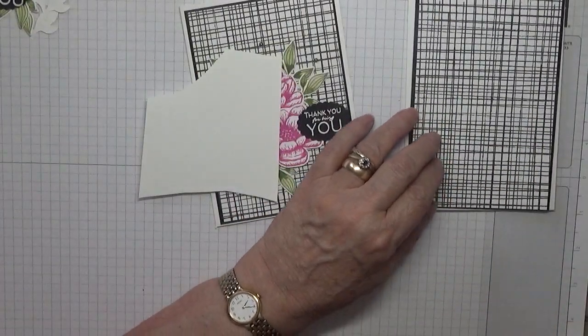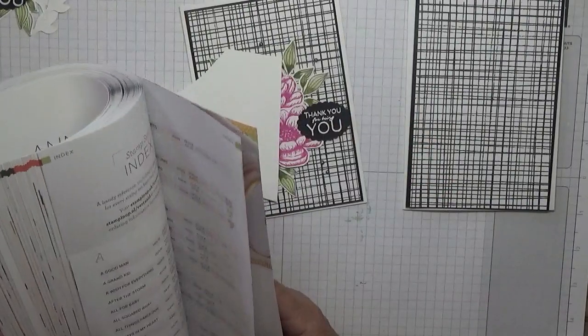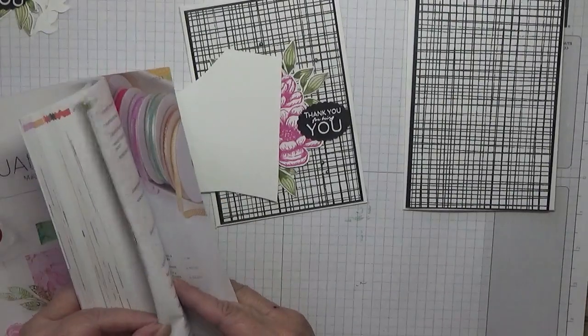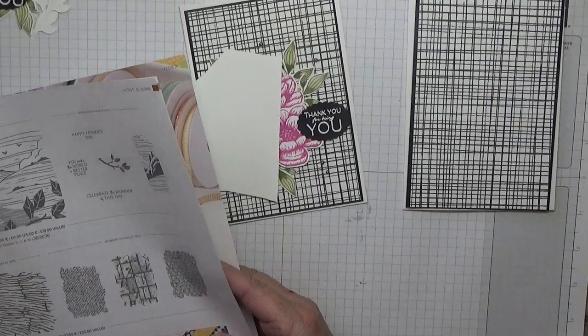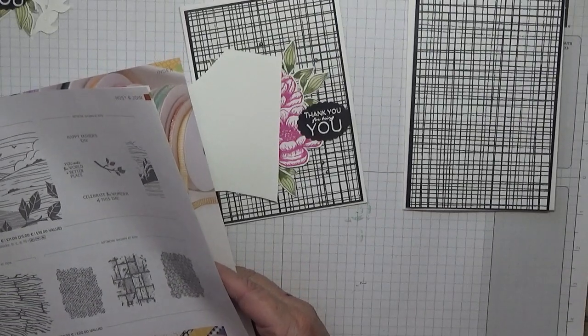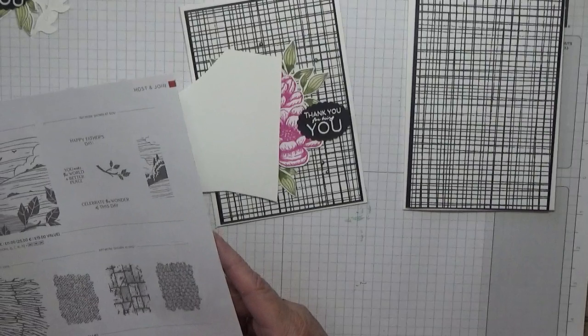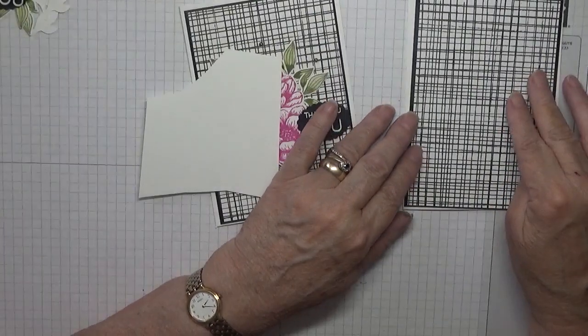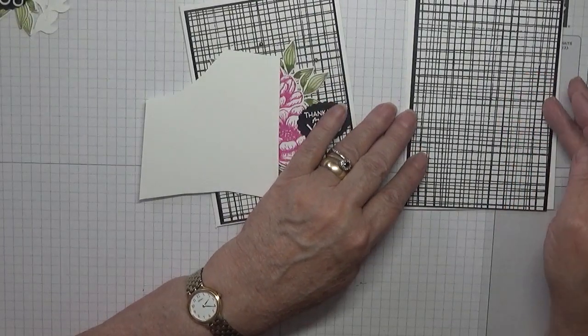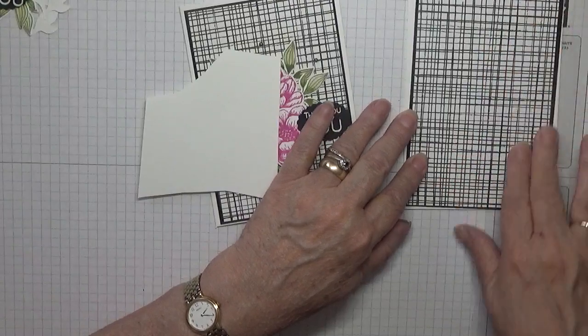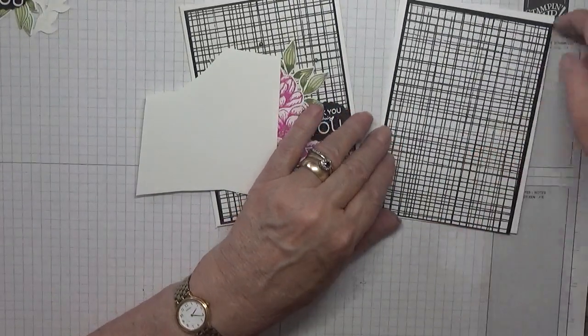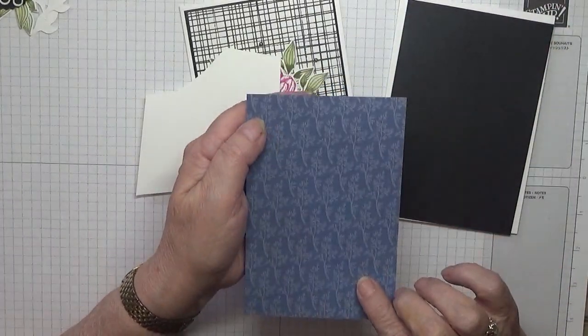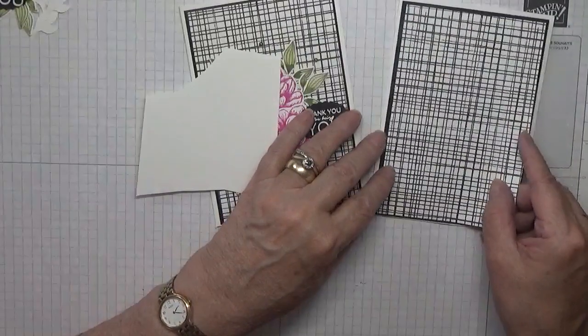I have some DSP which is in the hostess set at the back of the book, Pattern Party 12 by 12 DSP. If you spend the appropriate amount, you can get this. I think it was £17.99 for 40-odd sheets of 12 by 12. That is what's on the other side and that's Misty Moonlight. I like this checkered one.